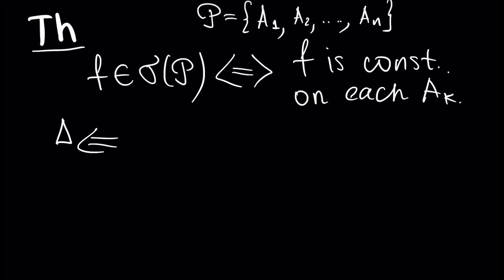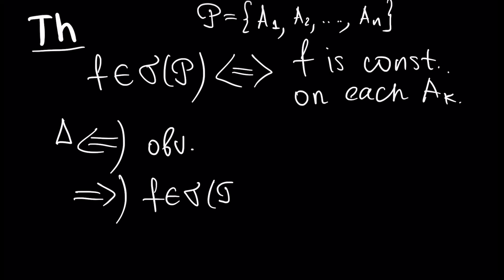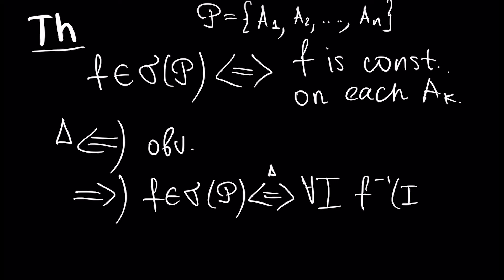The proof of one direction is obvious — by definition, when f is constant on each element of this partition, it will be sigma measurable. Now let's prove the other direction. Assume our function f is sigma measurable. By definition, this means that for any interval I, the pullback of this interval will be inside the sigma algebra generated by this partition.